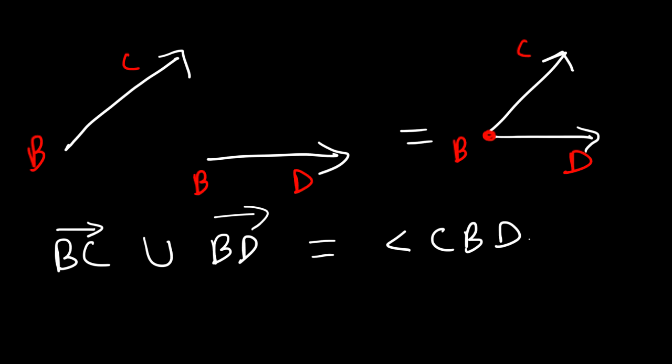But now, here's my question for you. What is the intersection of ray BC and ray BD? Think about it. What's the intersection? So where do these two rays, where do they meet? Where do they overlap? Notice that they meet only at point B. Ray BC is not part of ray BD. They only connect at a point, not at a segment or a line. So the answer is simply point B.